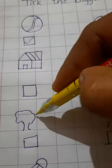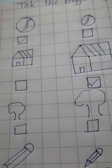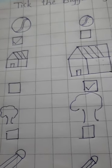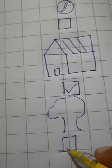Now this is a tree, and this is also tree. But which is the bigger? Bada wala kaun sa hai? Waha par mein tick mark karna hai. This is the bigger tree.